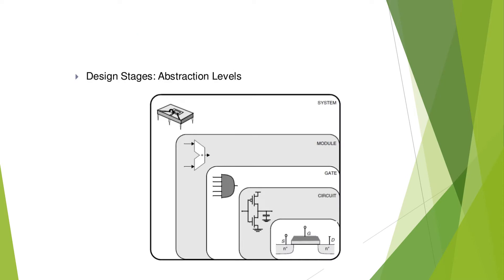Coming to design abstraction levels: if you want to design a chip, you start at the transistor level. Many transistors form circuits; many circuits form gates; many gates form modules such as multipliers or adders. These modules interact at the register transfer level, and many modules together form the complete system. These are the abstraction levels in chip design.